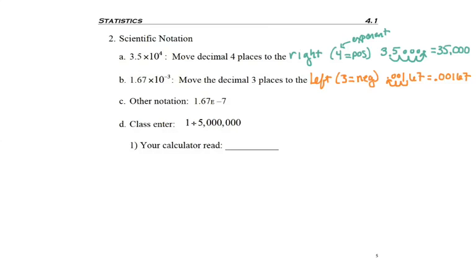Then one last thing that you might see in terms of calculator scientific notation is this: 1.67 e negative seven. The e stands for exponent, so this is really just telling you 1.67 times 10 to the negative seventh. So my suggestion to you is go ahead and get your calculator out and enter one divided by five million.